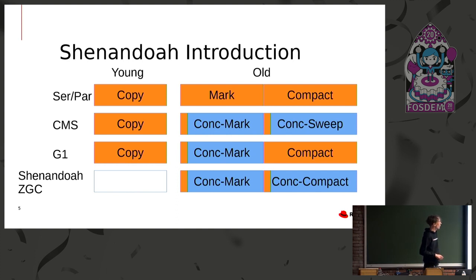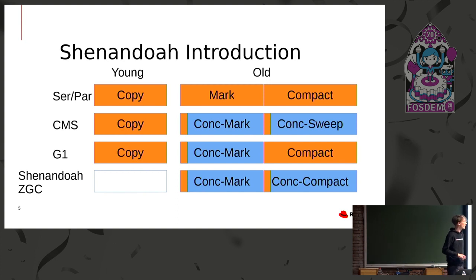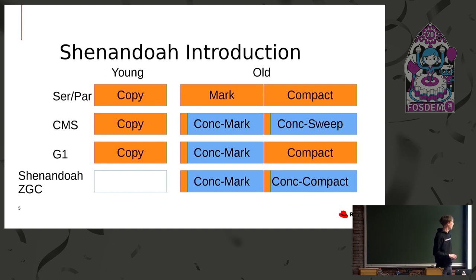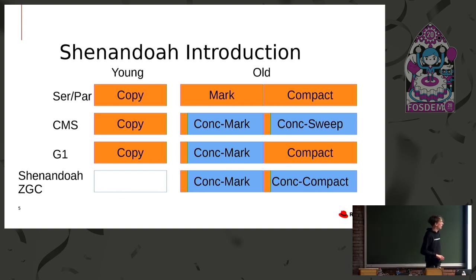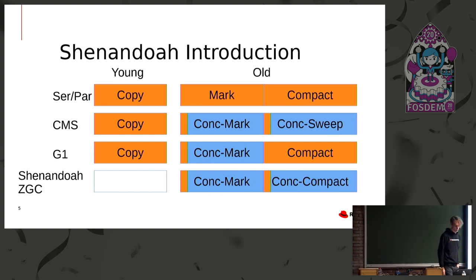We have G1, which does the marking phase concurrently but then has a stop-the-world compaction phase. The strength of G1 is that this pause can be controlled so that pause time is sort of under control, but it can still cause damage if the heuristics fail. And the new GCs — Shenandoah and also ZGC — don't have a young generation; the whole heap is collected concurrently, except for a few tiny pauses. So we have concurrent marking and concurrent compaction, which solves the fragmentation problem we had with CMS.